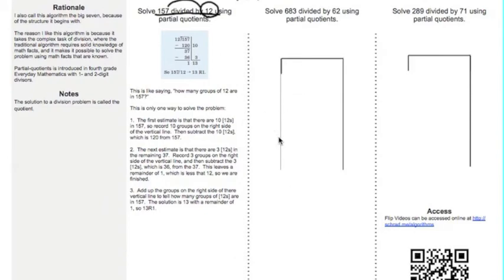It says, what is 683 divided by 62? So, I get 683 divided by 62.